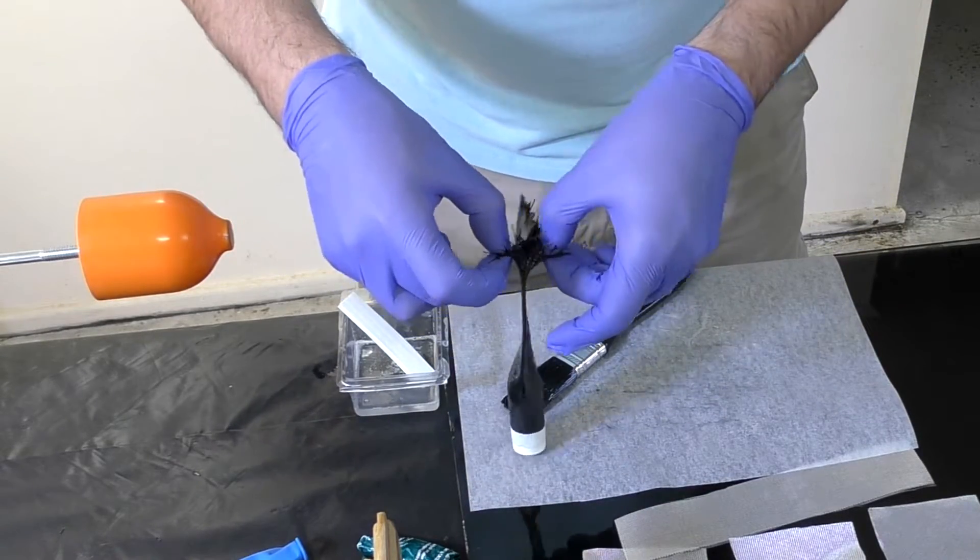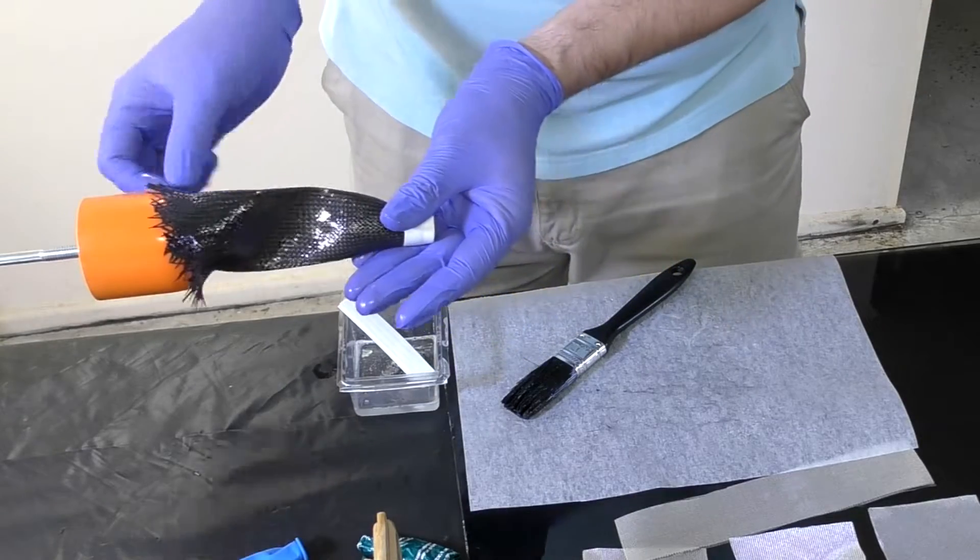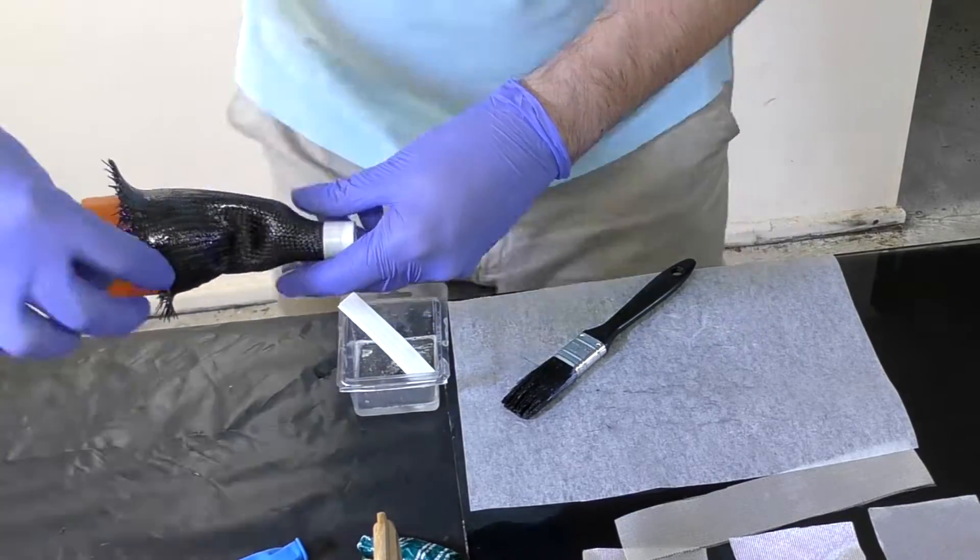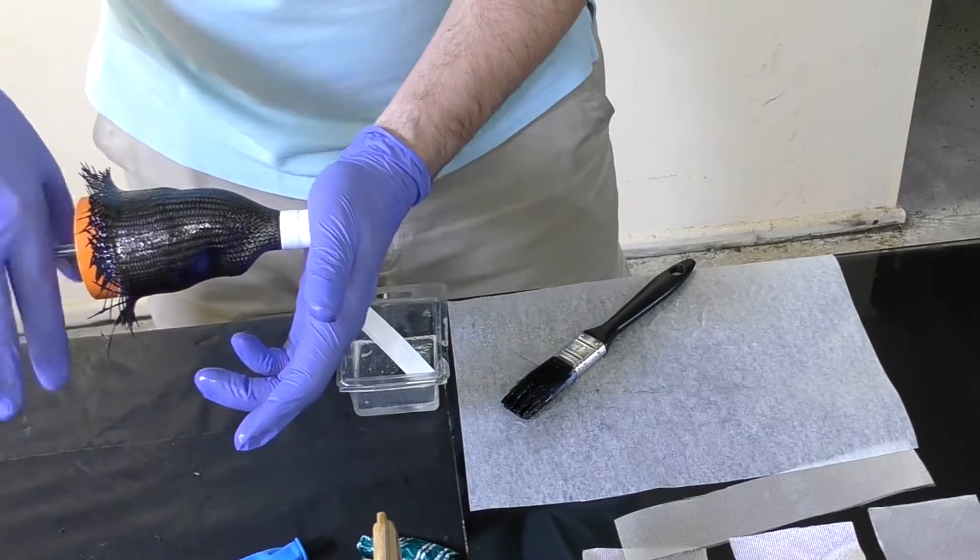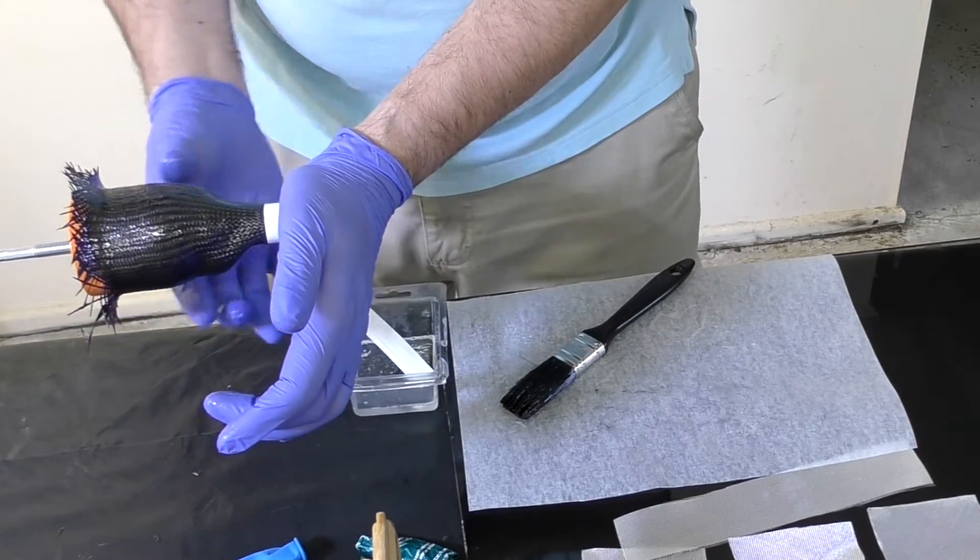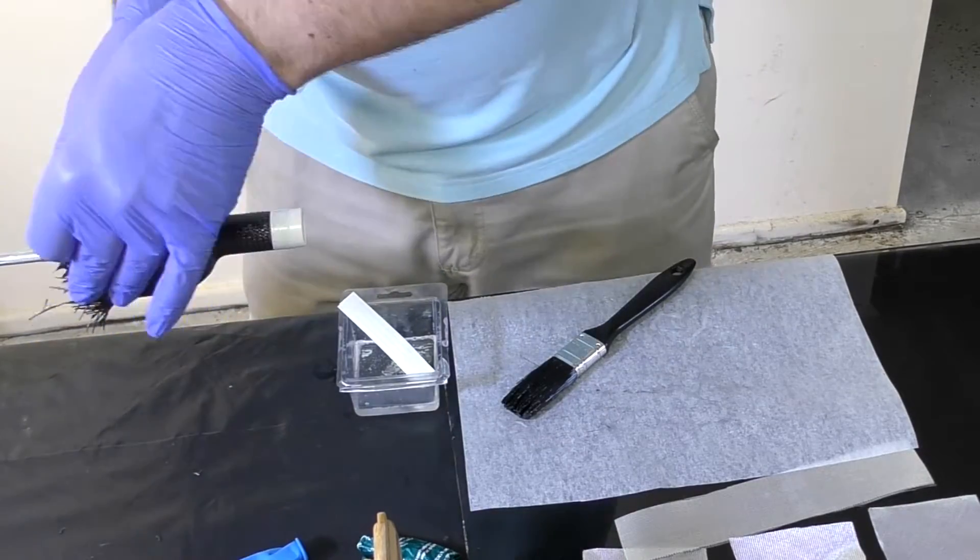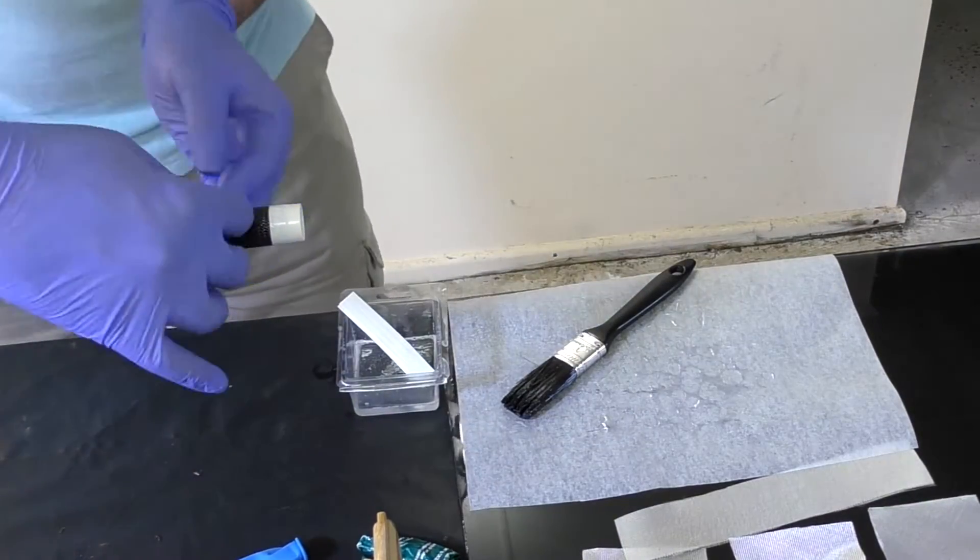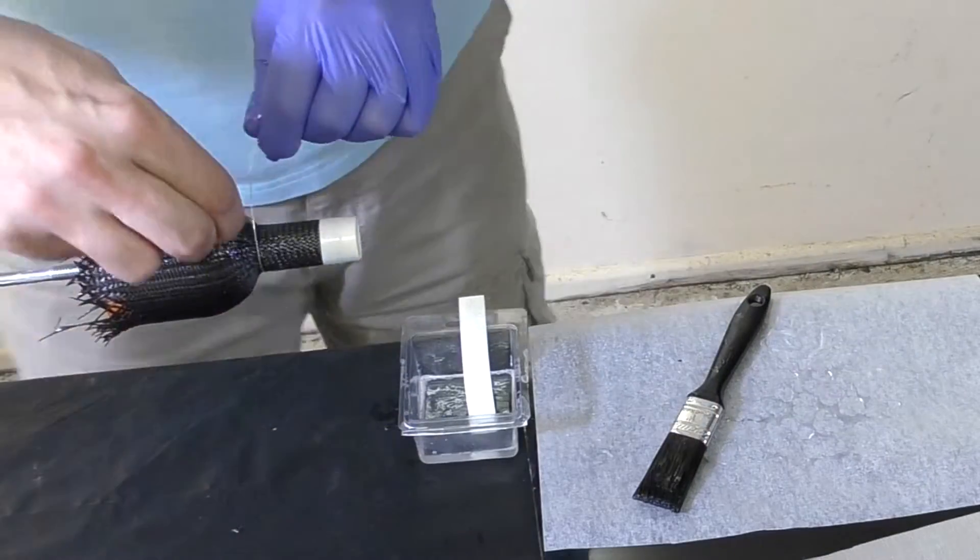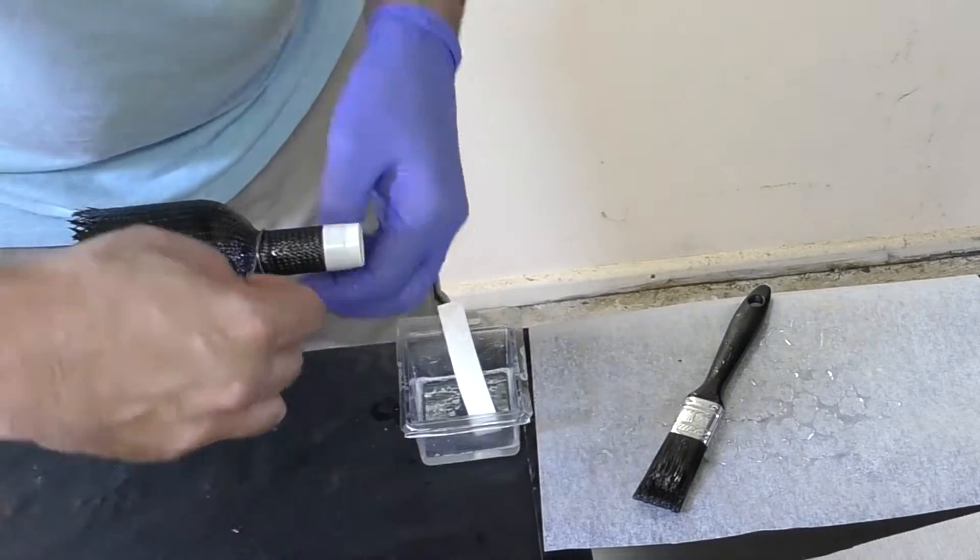You can see how tricky it is to get the wet sleeve over the mold. We then secure the neck with a piece of wire, which will eventually be removed.